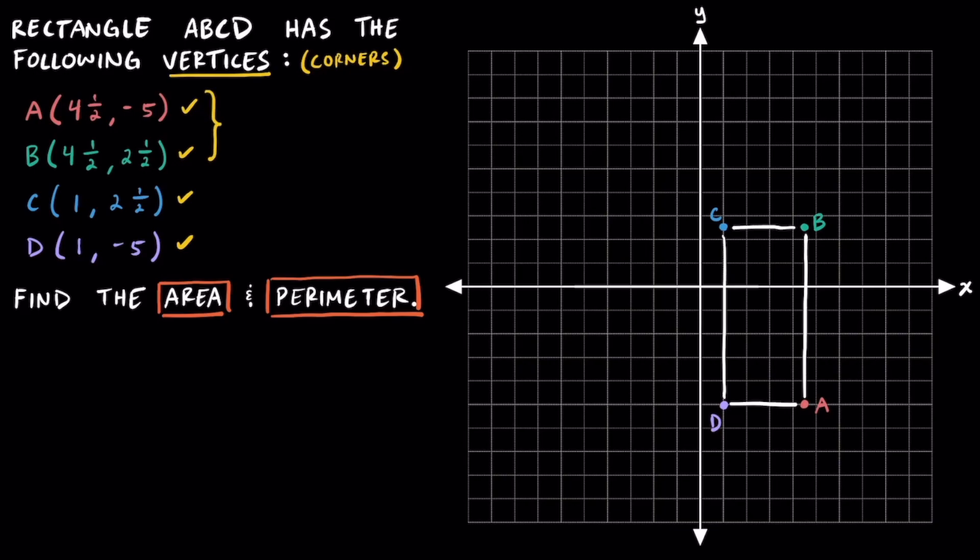To find the length of this rectangle, we can use the distance from point A to point B. Notice how the x coordinates of four and a half match for points A and B, so we just have to find the distance between negative five and positive two and a half, or their y coordinates. Because they're in different quadrants, we're going to add their absolute values and we get a total distance of seven and a half units for the length.